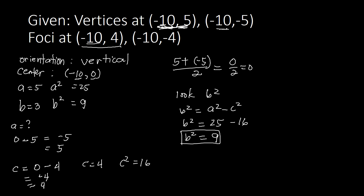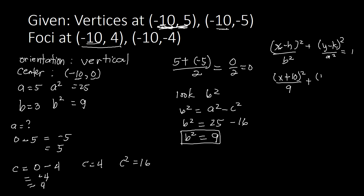We are now ready to write the standard equation. Since it's vertical: (x − h)²/B² + (y − k)²/A² = 1. Plugging in: H is −10, so this becomes (x + 10)² over 9, plus y squared — since K is 0 — over 25, equals 1. That is our standard equation of our ellipse.